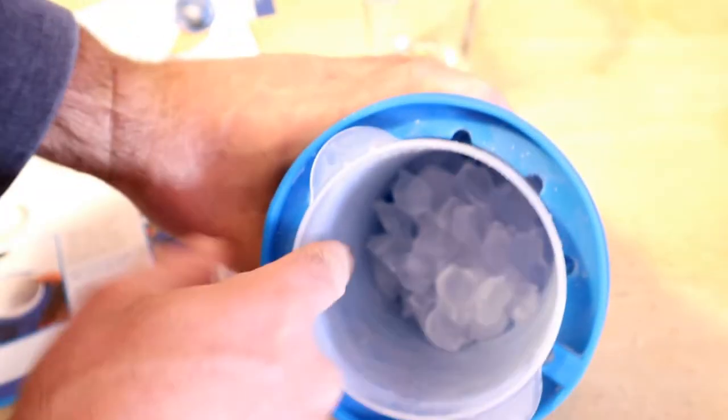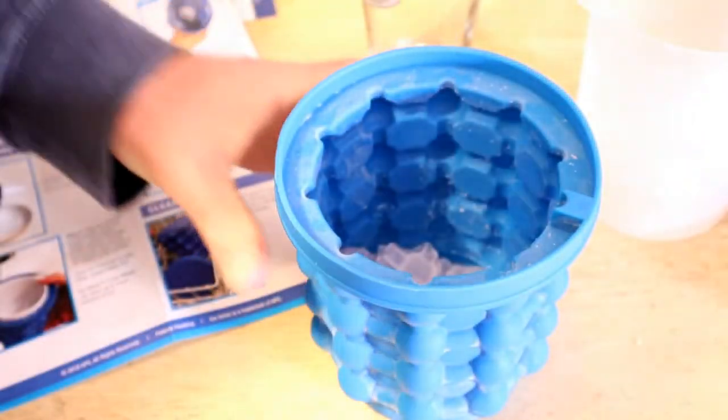They had to pop the ice out of the bottom there. But yeah, so you can put the sleeve back in. That's a little bit harder because there's some that kind of get stuck. So, I'd probably just dump this out. Put the sleeve back in. And then you're ready to make more ice cubes.